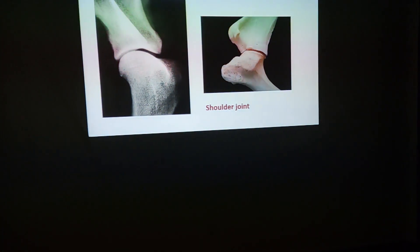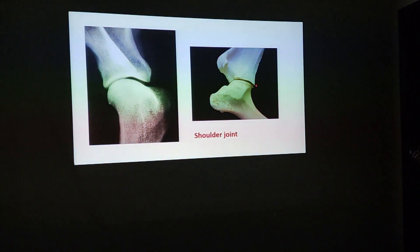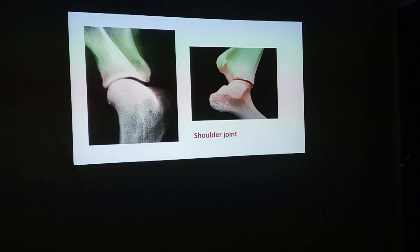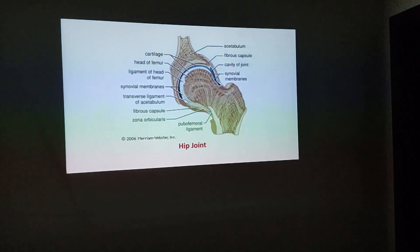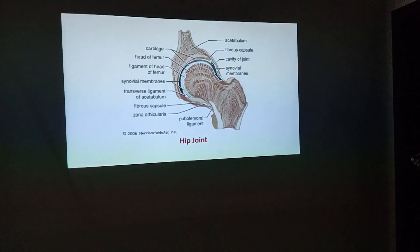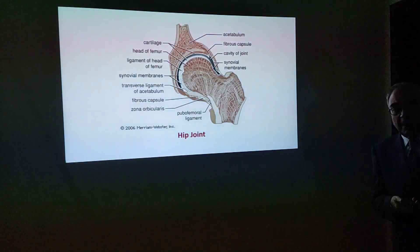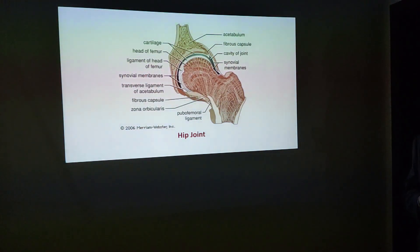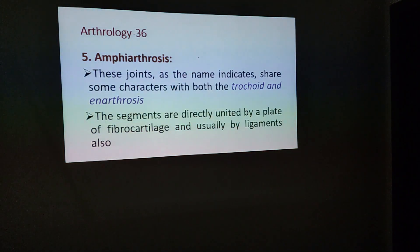As you can see here, the shoulder joint is formed by the glenoid cavity of the scapula and the head of the humerus, and the hip joint is formed by the head of the femur and the acetabulum. In animals, the main movements in these joints are flexion and extension, but in human beings all the types of movements we have discussed are possible. Then there is the amphiarthrosis.